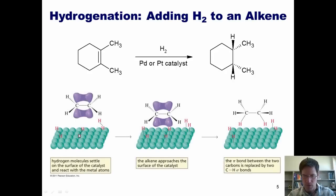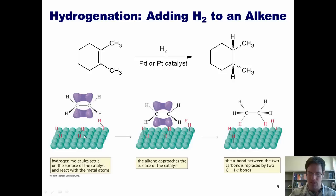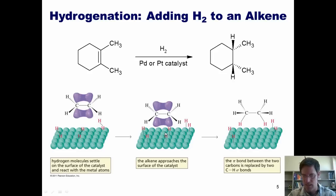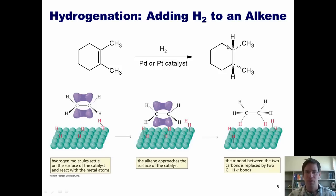The reason for the cis addition is the mechanism. The alkene substrate nestles down onto the surface of the palladium or platinum catalyst, and the hydrogens are transferred from that catalyst onto the same face of the alkene. Thus, they always end up being added to the same side, giving syn addition and, for the case of cyclohexenes, cis products.